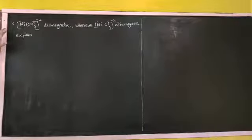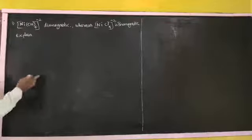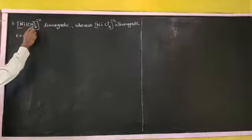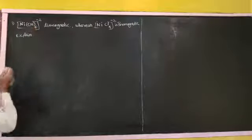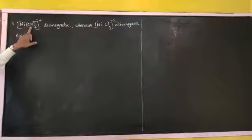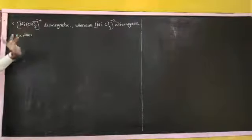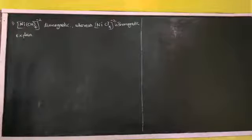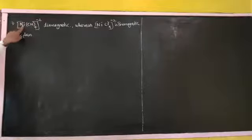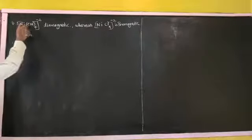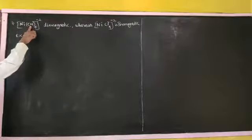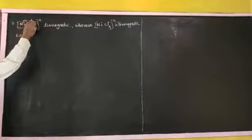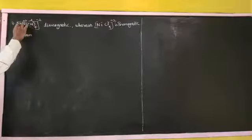Now we can find these terms. First I am going to solve the first coordination sphere: [Ni(CN)₄]²⁻. The IUPAC name is tetracyanidoNickelate(2-). We have to find the oxidation state of nickel. The overall charge is minus 2; each cyanido ligand is minus 1, so 4 ligands give minus 4. Adding plus 2 with minus 4 gives minus 2, so the nickel oxidation state is plus 2.